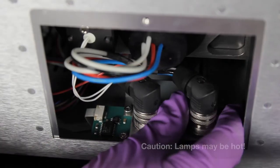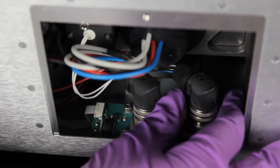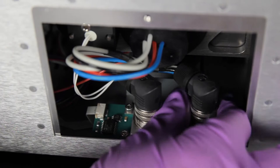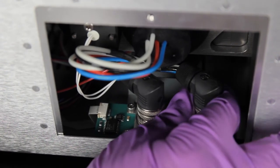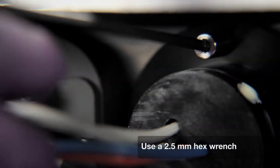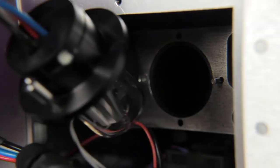To remove the lamp, loosen the collar on the cable plug of whichever lamp you are replacing. Once loose, disconnect the plug by pulling upwards. With a 2.5 millimeter hex wrench, remove the top and bottom screws from the lamp casing and remove the old lamp.